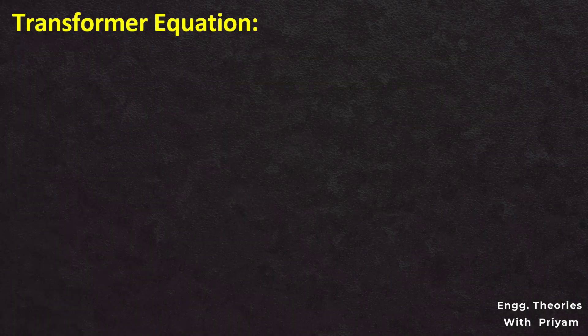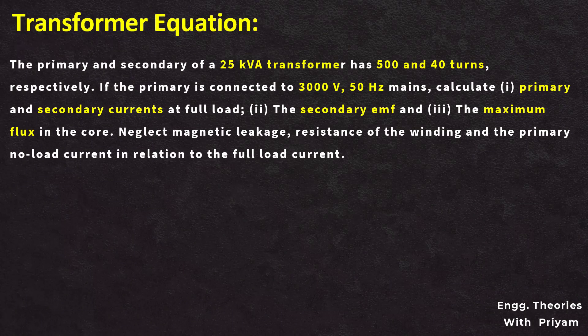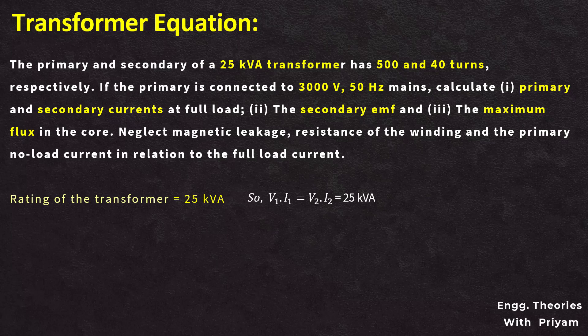Now let's see another mathematical problem where we have a 25 kVA transformer with primary and secondary turns of 500 and 40 respectively. If the primary is connected to a 3000 V supply at 50 hertz mains, we need to calculate the primary and secondary currents at full load, secondary EMF, and maximum flux in the core, neglecting winding resistance and primary no-load current relative to full load current. Treating this as an ideal transformer where V1·I1 = V2·I2 = 25 kVA, with V1 = E1 = 3000 volt.